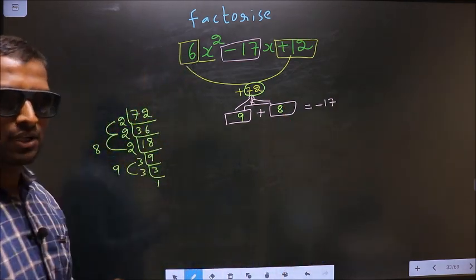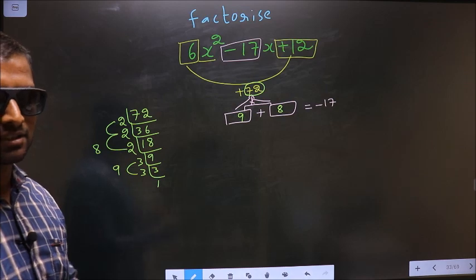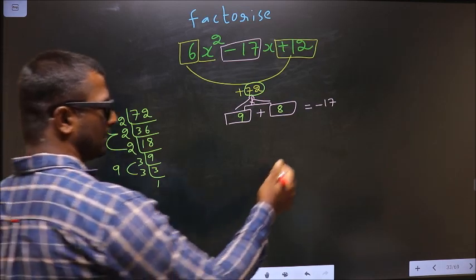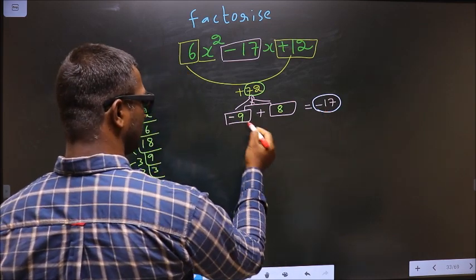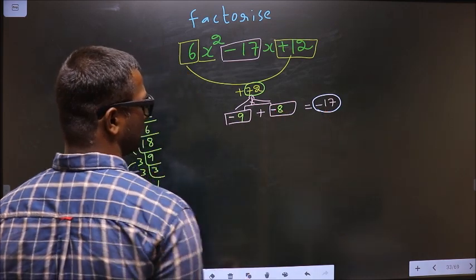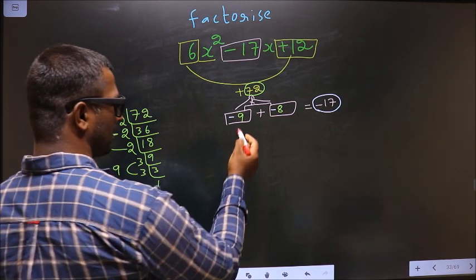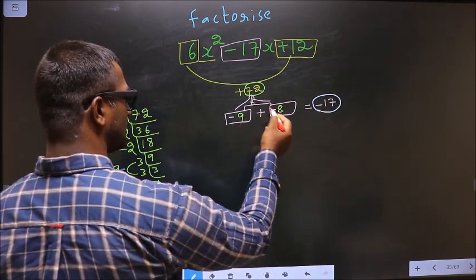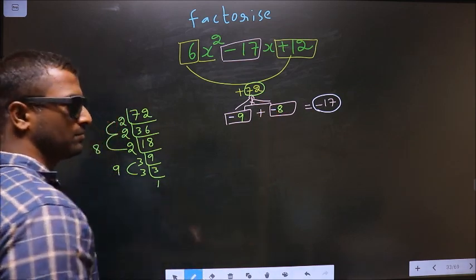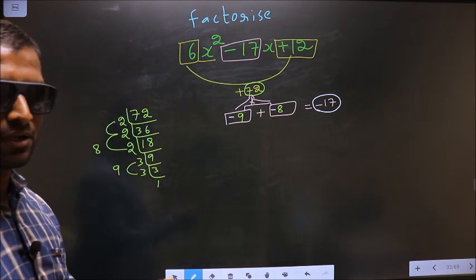Now we should adjust the signs. What I mean is here I should get -17. To get -17 I should put minus before 9 and also minus before 8. -9 - 8 is -17, -9 into -8 is +72. So now the signs are also adjusted.